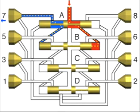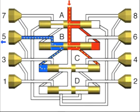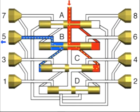Once piston B has reached its left-hand final position, the junction channel to the right-hand end of piston C is opened. The lubricant which flows from above moves piston C to the left, causing the lubricant quantity ahead of the left-hand end of piston C to be dispensed to outlet 5.